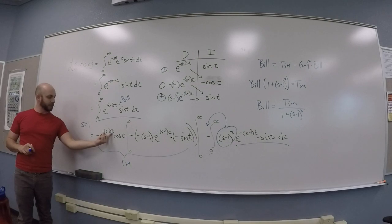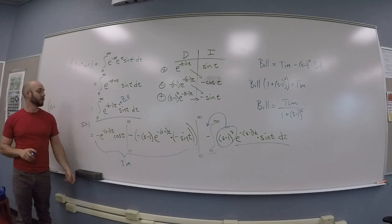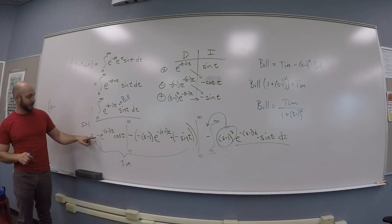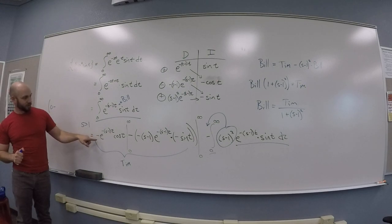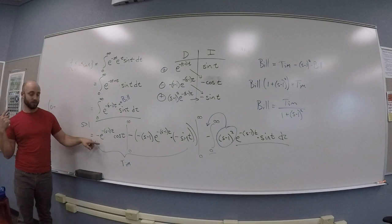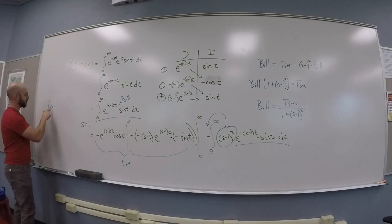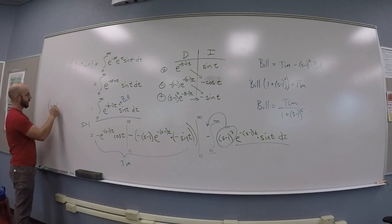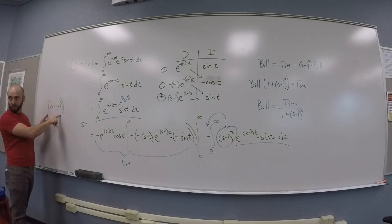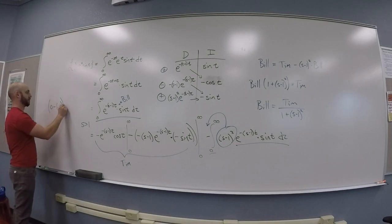So, when we evaluate at 0, what happens? When I evaluate at 0, cosine at 0 is 1. So, I have 0 is from the infinity part minus. So, you get 1. Negative 1. Negative 1. So, the first part of Tim is 1. And the second part is 0. Tim is 1.